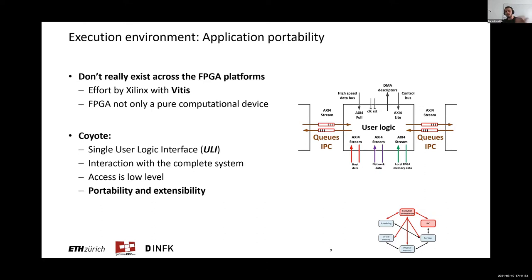Xilinx came up with the Vitis toolchain, which treats an FPGA as a pure computational device and as an accelerator. However, FPGAs can be used for a bunch of other stuff — they can perform IO, be used for in-network data processing, or placed as a bump in the wire, which is actually where they shine the most. This is not really handled inside a toolchain like Vitis. So in Coyote, we provide a single user logic interface, the ULI, which defines a clear set of interfaces for interaction with every part of the system including all services. The interaction is fairly low level using AXI protocol — we focus on AXI stream, which is fairly easy to use. The advantages are portability and extensibility. To demonstrate this, we integrate open source RDMA and TCP/IP network stacks.